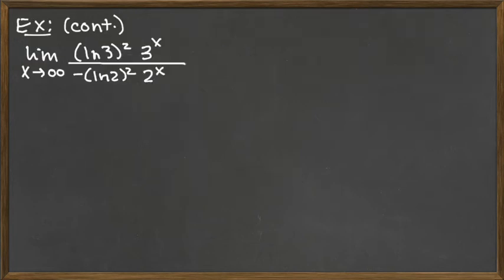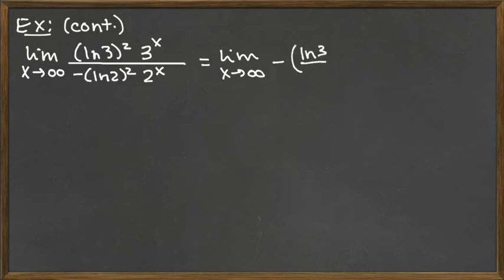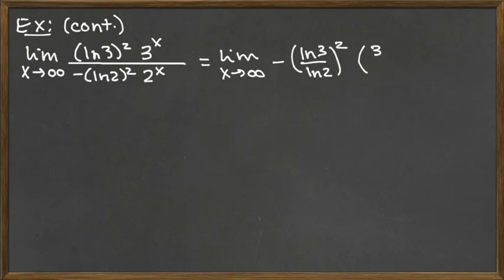So let's think algebraically about what we could do that would be helpful. Since we're really just looking at exponentials, we're going to go the algebra route at this point. I'm going to rewrite it here and group things strategically. The first part is a negative from the negative factor on the bottom, written as natural log of 3 over natural log of 2 quantity squared using exponent rules. And the more important rewriting is 3 to the X over 2 to the X as 3 halves to the X power. That's the critical one.